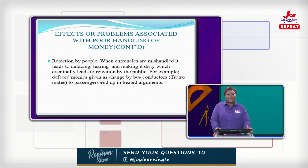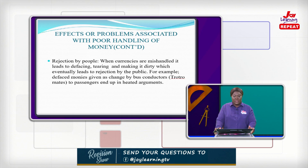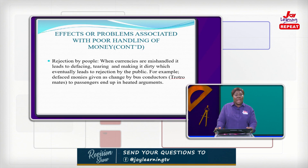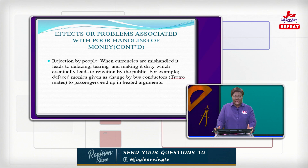The second point is rejection by people. When currencies are mishandled, it leads to defacing and making the notes dirty, which eventually leads to rejection by the public. For example, when you board a bus, you hear people arguing because a conductor gives defaced money as change and passengers refuse to accept it. Defaced money given as change by bus conductors leads to heated arguments.